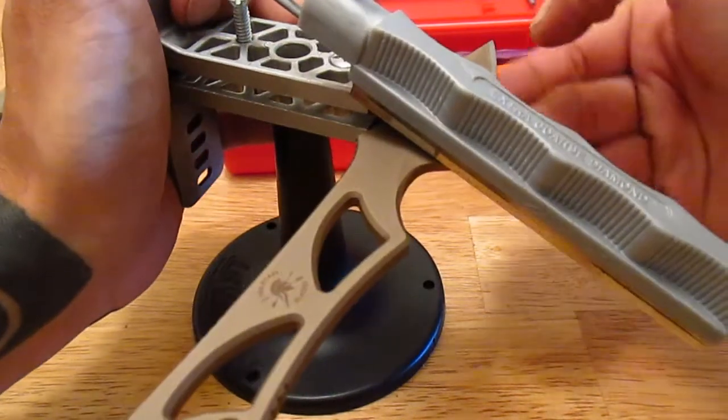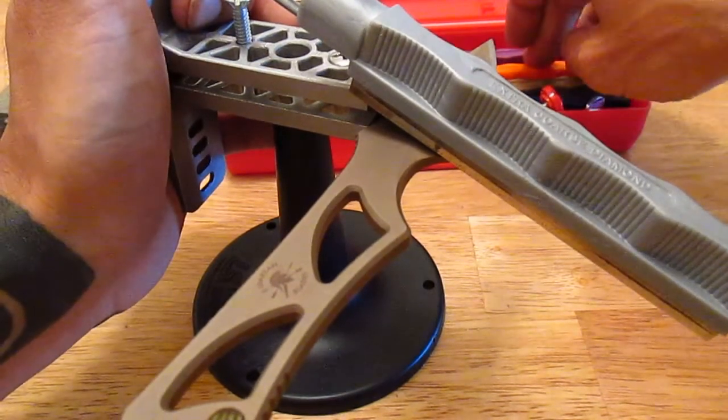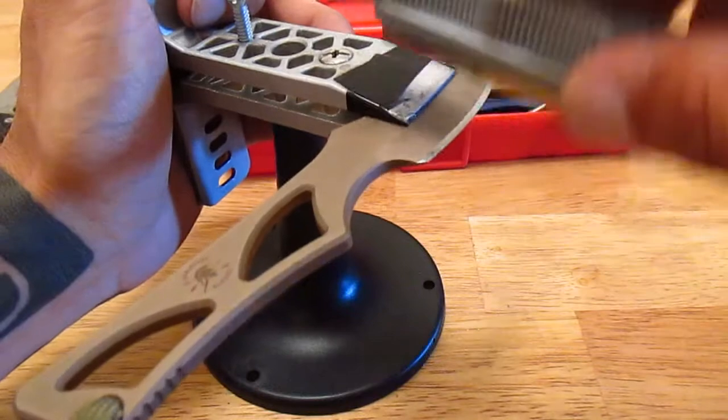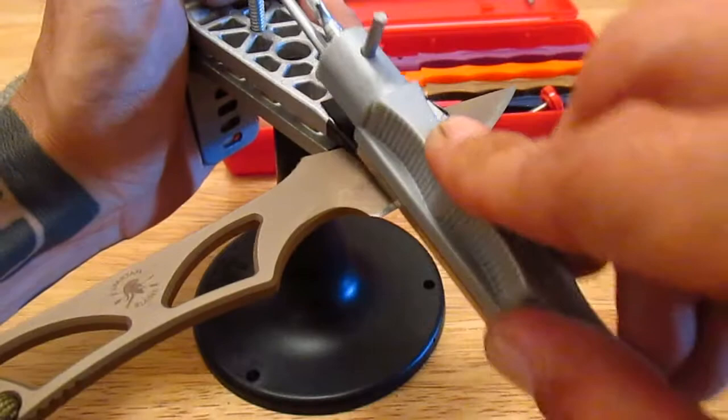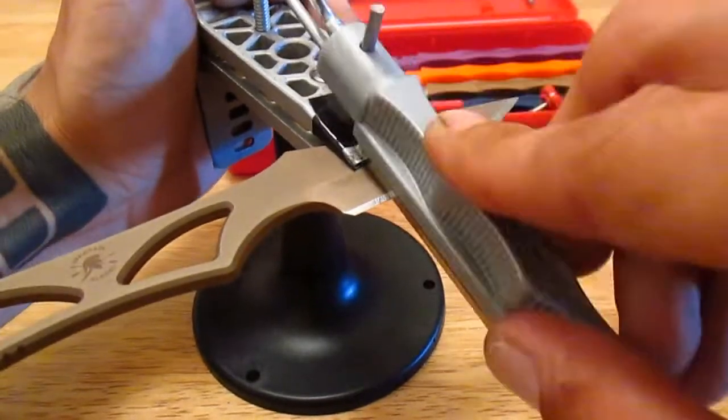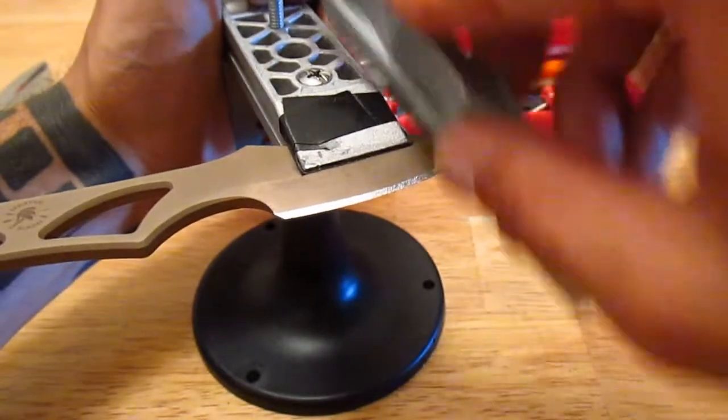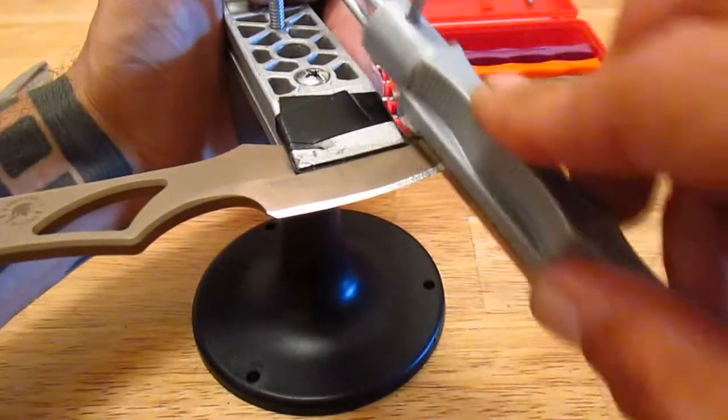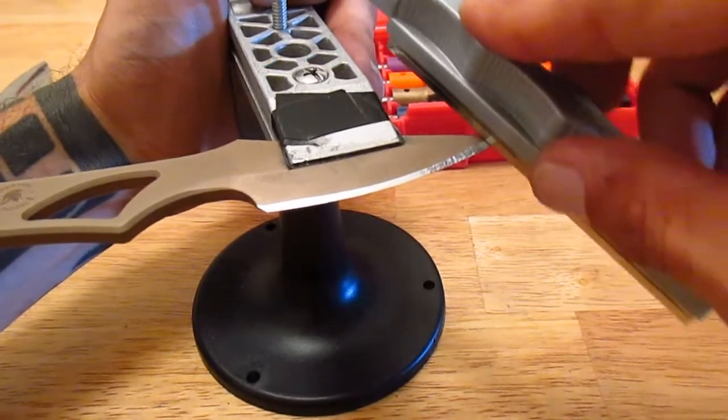Once you complete a stone and both angles are correct, you move on to the next stone and then the next and then the next. This system produces a really fine edge. It also can produce a really polished edge - gives it almost a factory look or almost sometimes even a better polish than the factory.